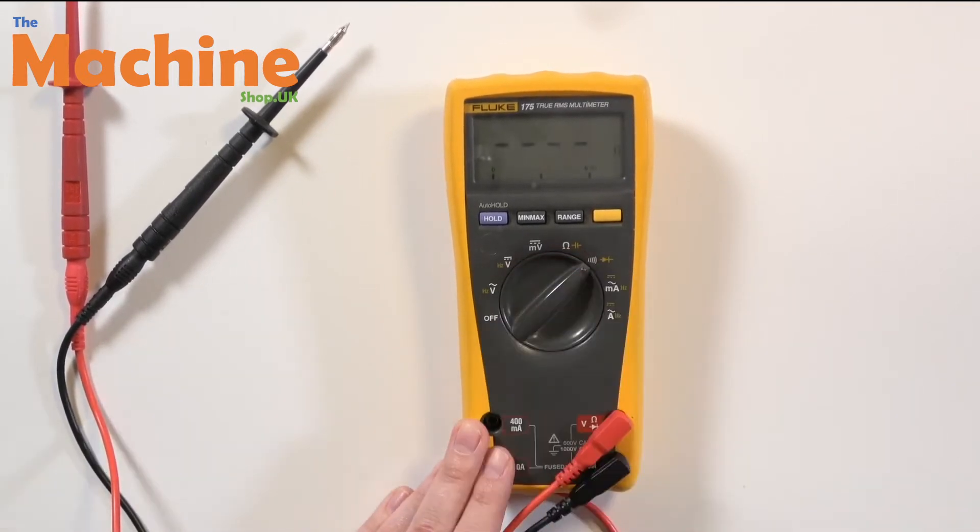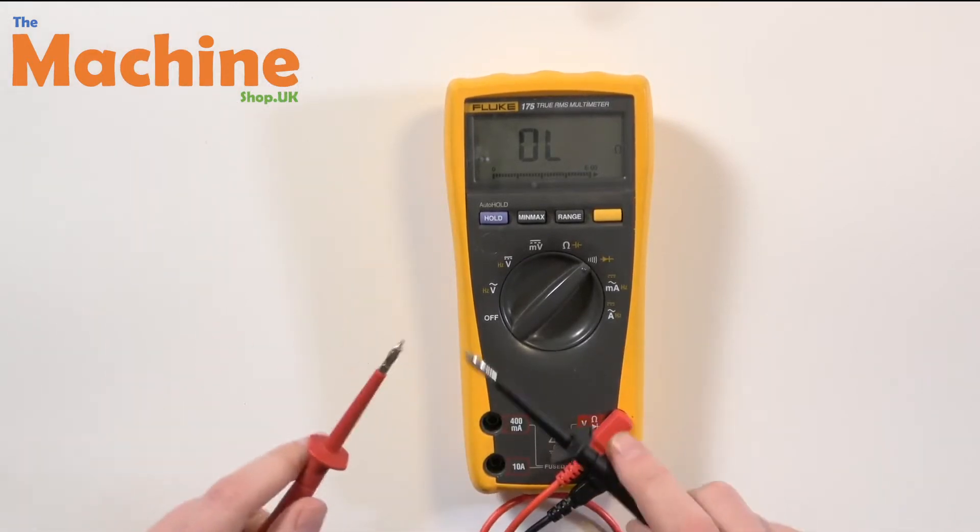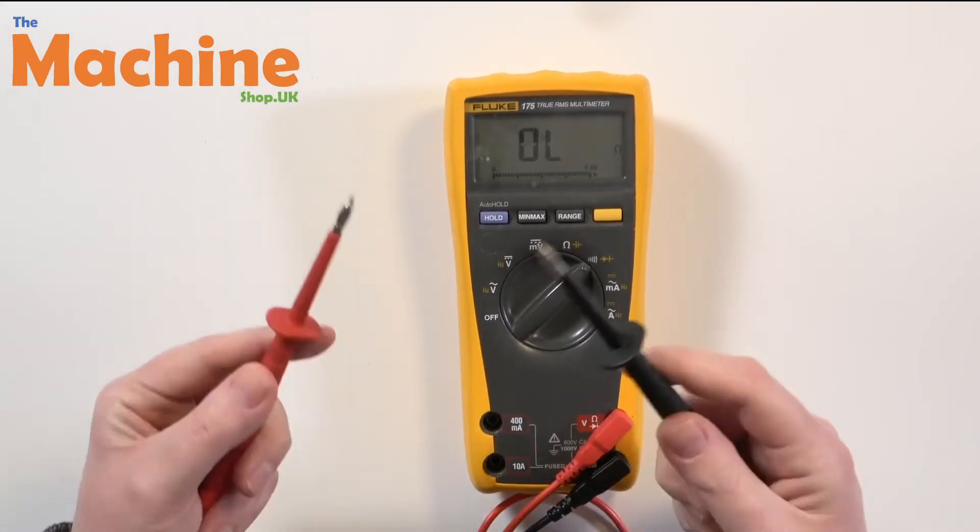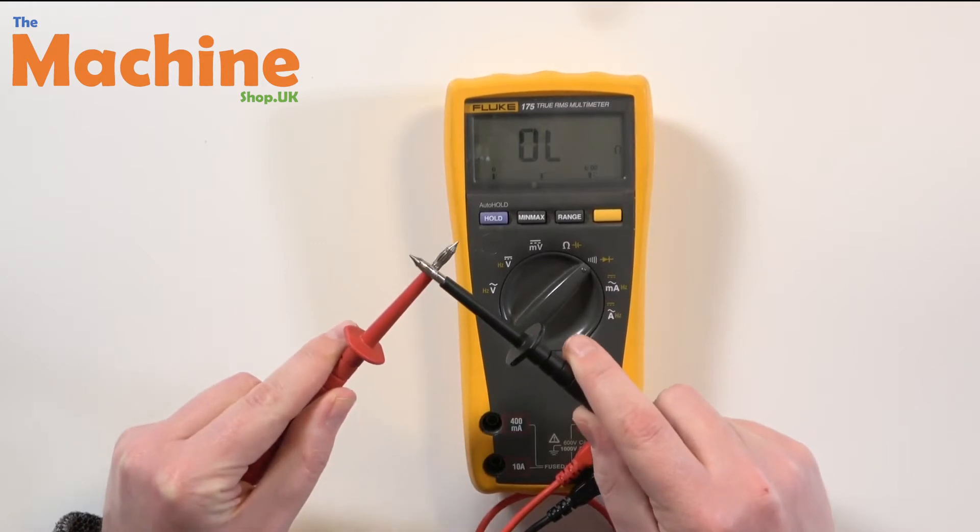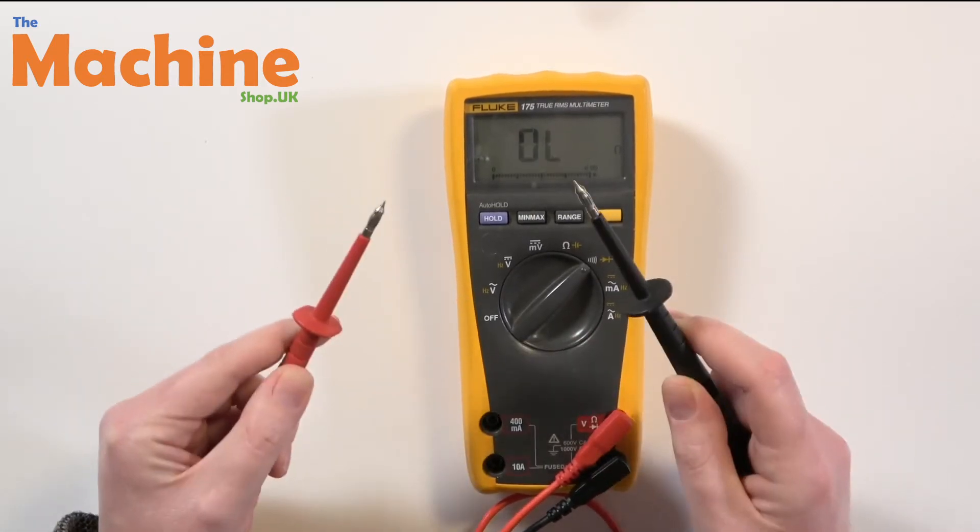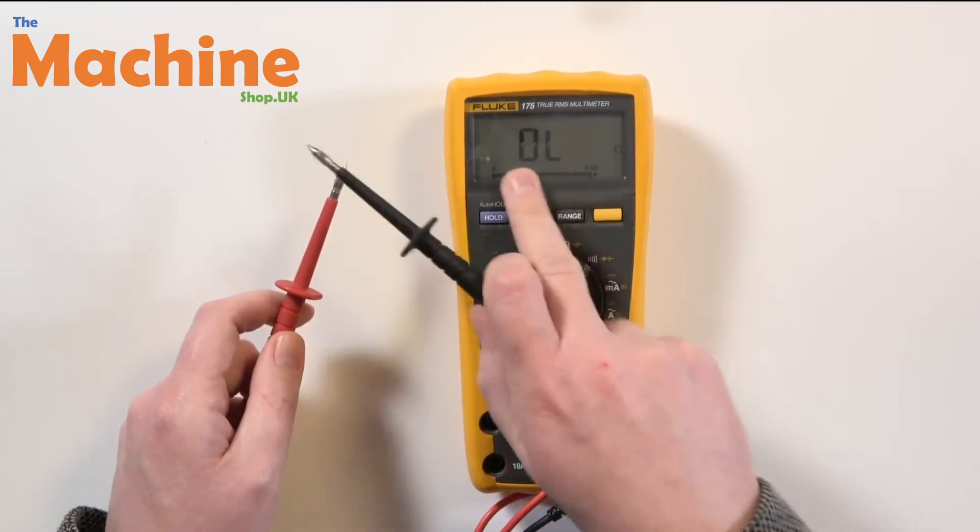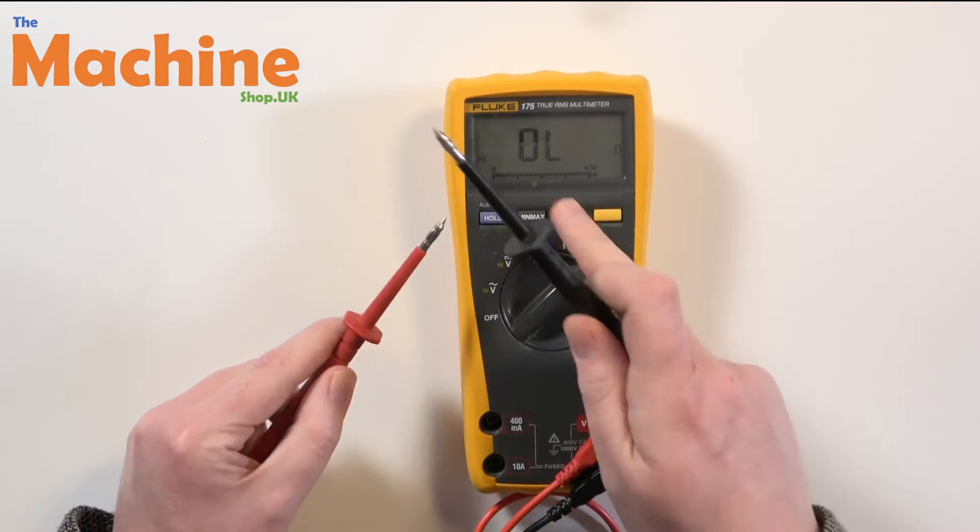Now I mentioned that this one's got a continuity feature which is this one here. That basically means that it tests to see if there's a connection between two points. So if I get my probes and touch them together it makes a nice audible sound to tell me that there is a connection between the two and even shows me in ohms on the reading what that difference is.